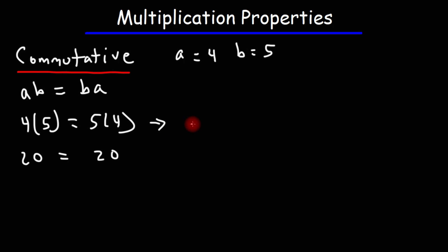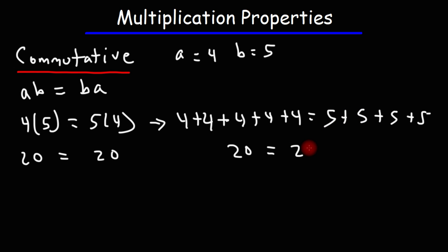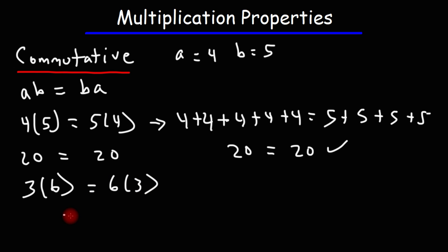4 times 5 — you can think of it this way: think of adding 4 five times. Multiplication is repeated addition. 5 times 4 is basically 5 added to itself 4 times: 4 plus 4 is 8, plus another 4 is 12, plus another 4 is 16, plus 4 is 20. If you add 5 four times: 5 plus 5 is 10, plus 5 is 15, plus 5 is 20 — you get the same result. If we multiply 3 and 6 or 6 and 3, it will be the same: 18. So that's the commutative property of multiplication — a times b is equal to b times a.